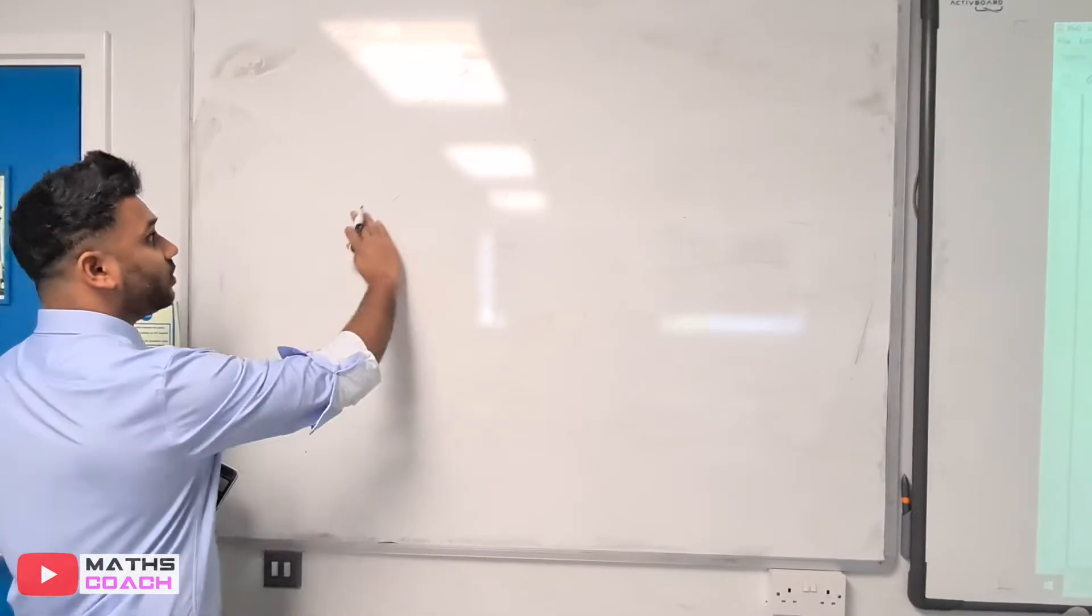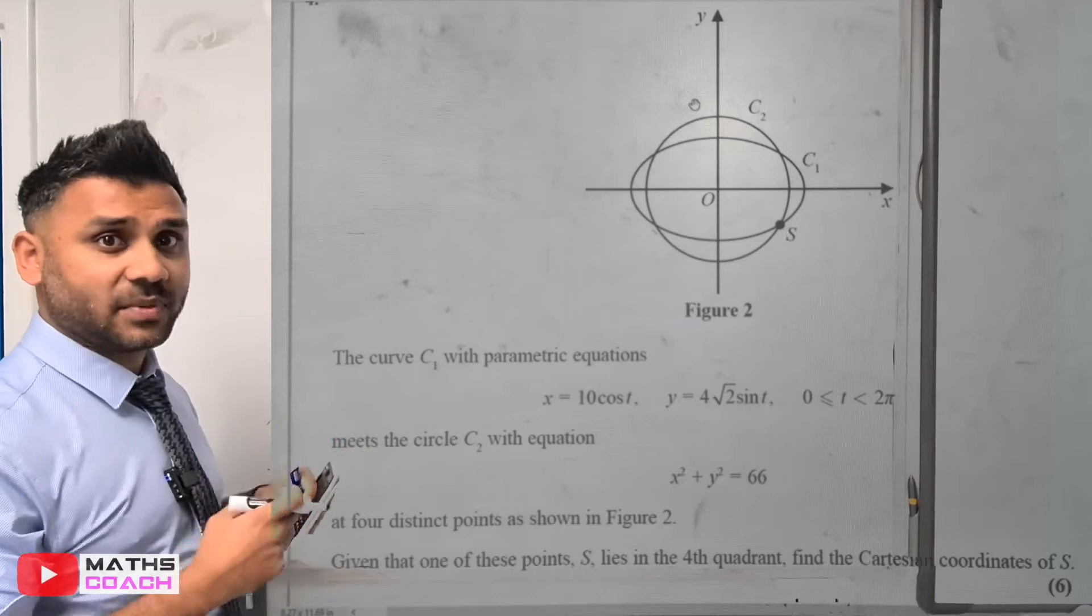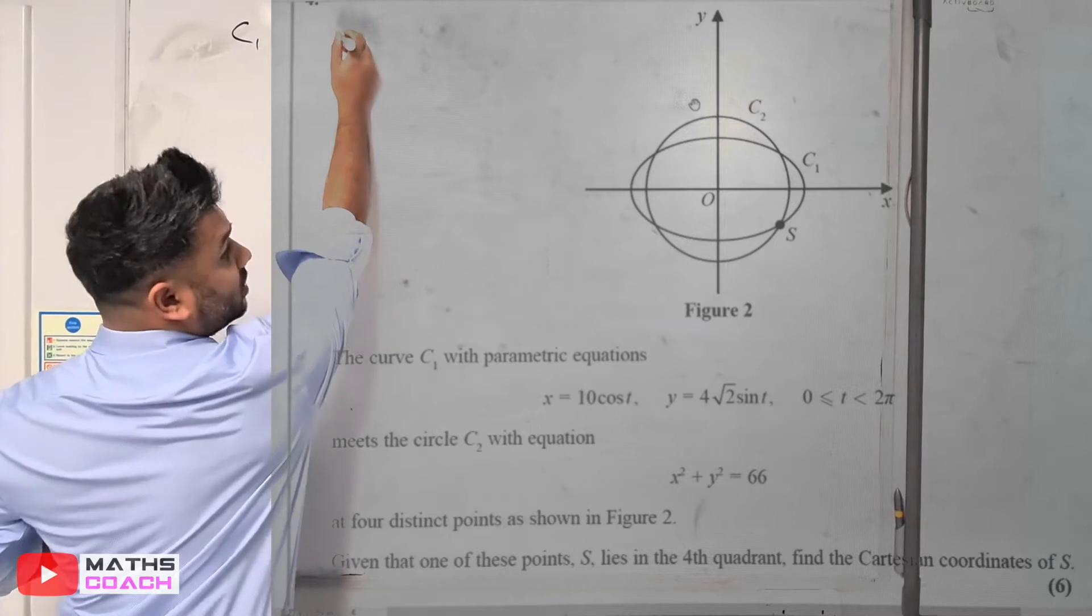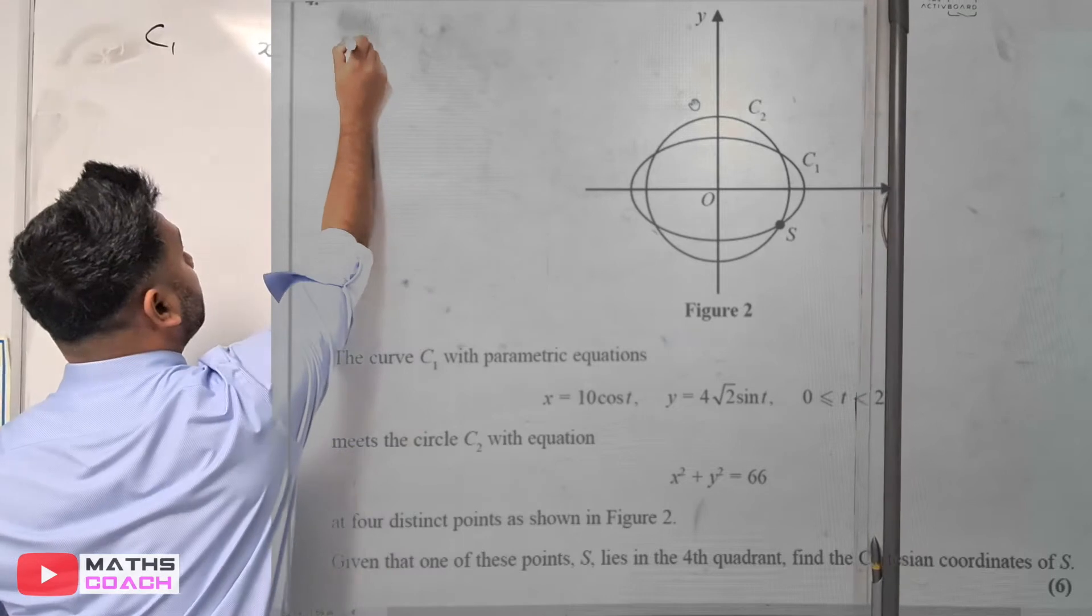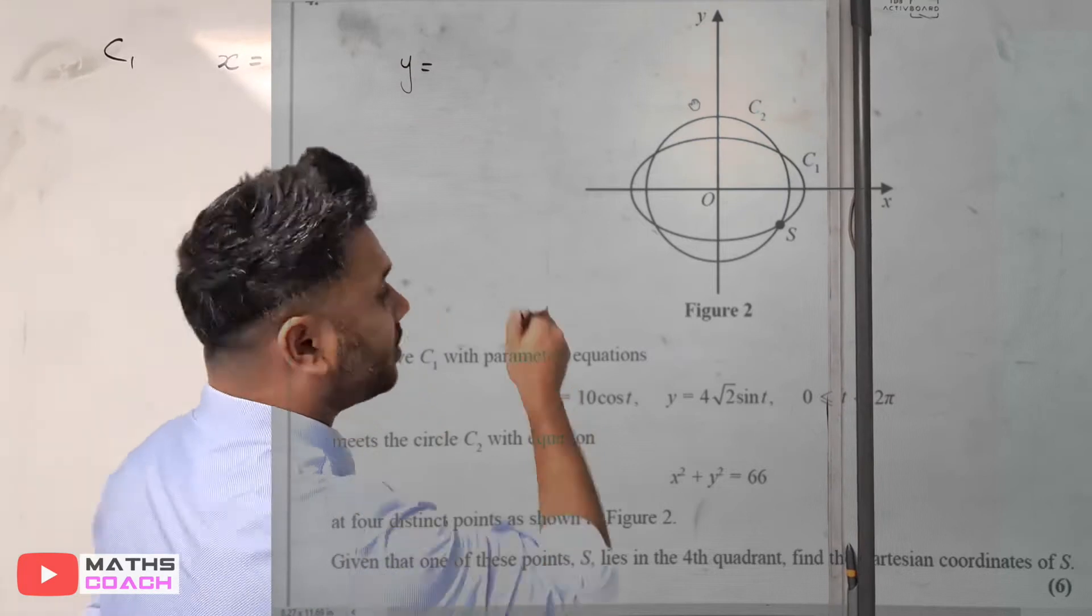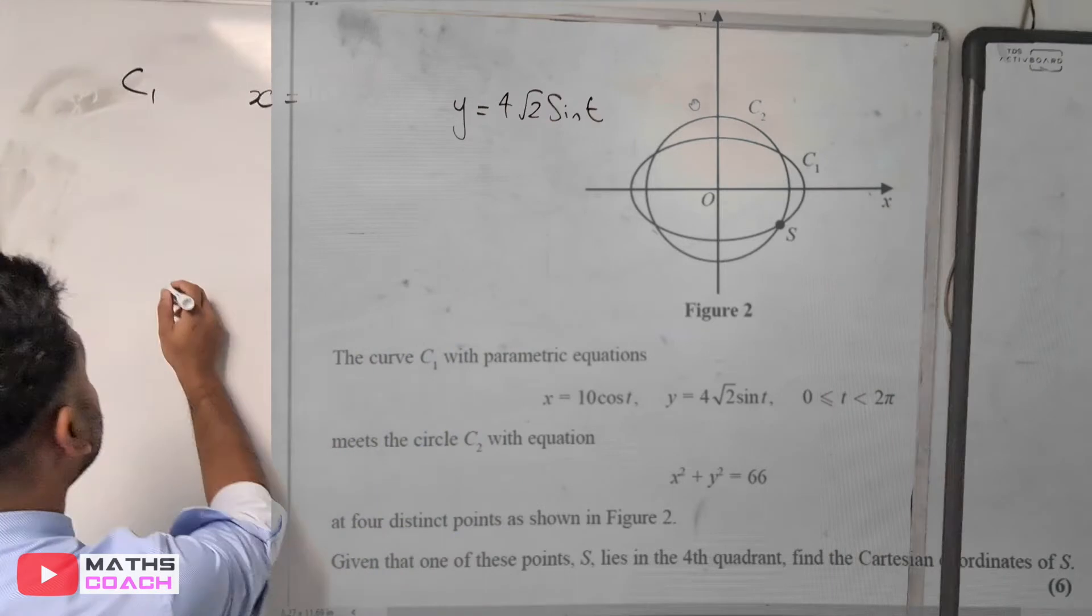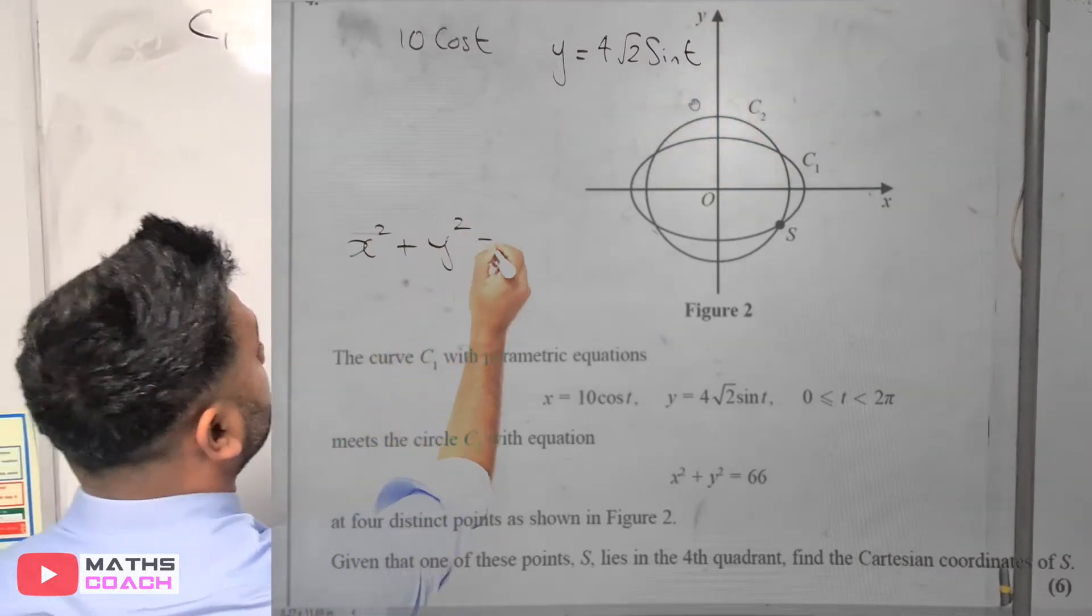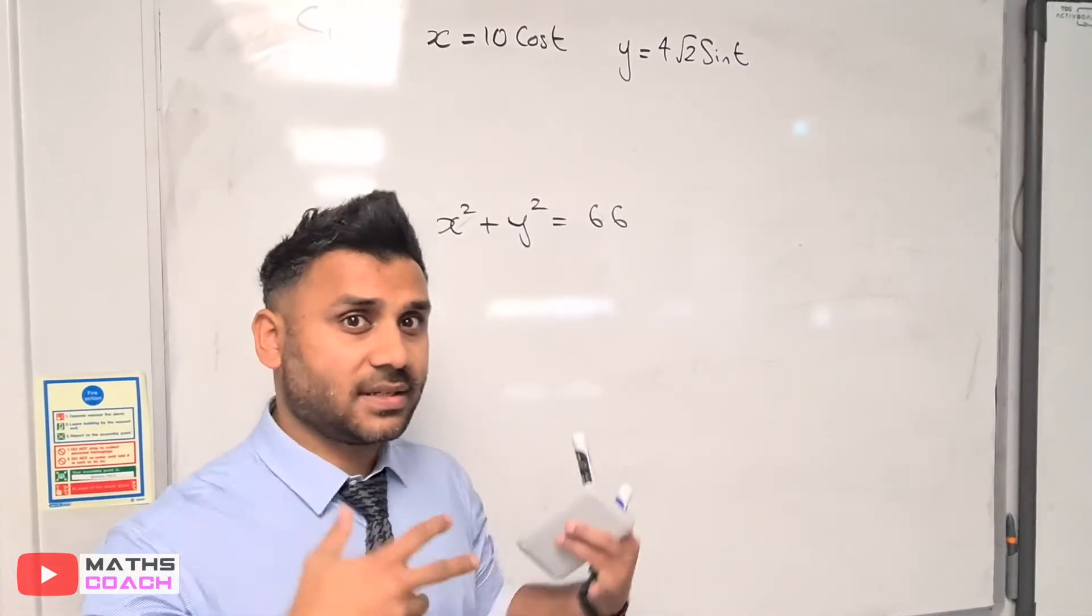Let's start working this out. I'm going to rewrite the information, selecting only what we need. Curve 1 has the parametric equation x = 10 cos t and y = 4√2 sin t. Curve 2 is given as x² + y² = 66. When finding where curves intersect, you're solving simultaneous equations.